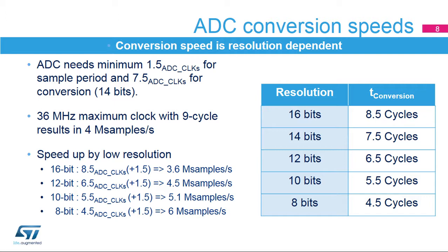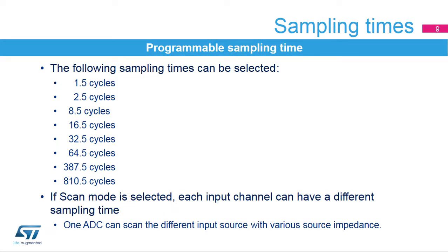For higher sampling speed, it is possible to reduce the resolution down to 8 bits, then the sampling speed can go up to 6 megasamples per second. The sampling time can be programmed individually for each input channel of the analog-to-digital converters. The sampling times listed in this slide in ADC clock cycles are available. Longer sample times ensure that signals having a higher impedance are correctly converted.